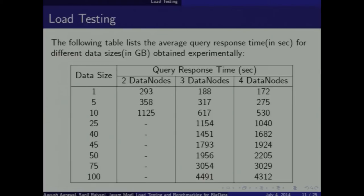We then moved to three data nodes, which ran up to 100 GB and failed beyond that when we tried testing it. For four data nodes, we are yet to test beyond 100 GB — that is included in future work. Since three data nodes ran to 100 GB, four will surely run beyond that, likely beyond 100 GB.